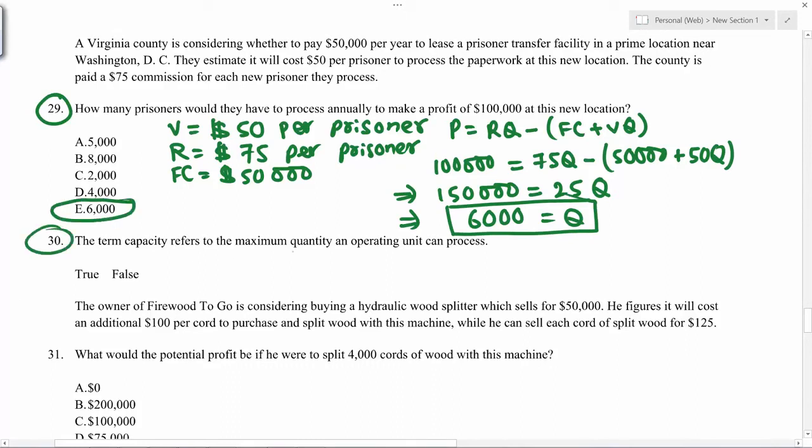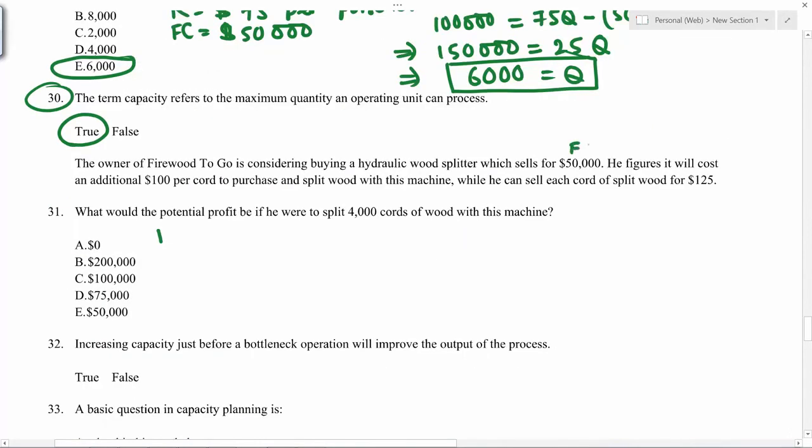Term capacity refers to maximum quantity an operating unit can process. That's correct. This is your fixed cost. So this is variable cost. This is revenue. So your equation will be...